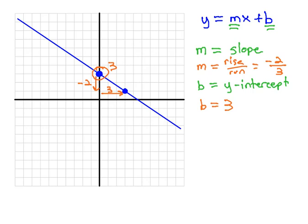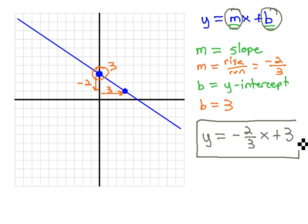We can then plug this information into y equals mx plus b, by replacing m and b with the values we found. This gives us y equals the slope, negative 2 thirds, times x, plus b, which we just found out was 3. This is the equation whose solutions are represented by this line on the left.